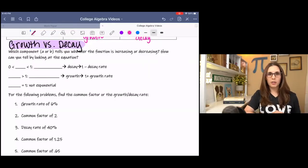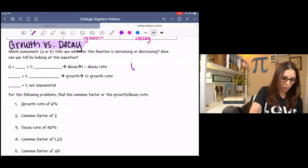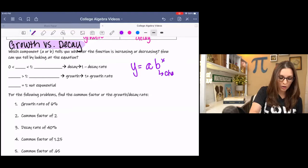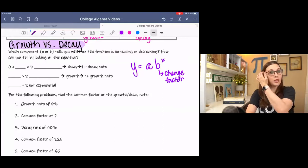In my last video, we talked about the parent function for an exponential equation was y equals a b to the x, where b was the change factor, and a was the initial value or y-intercept.